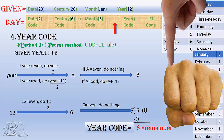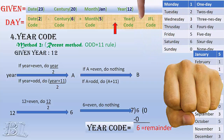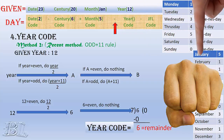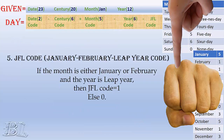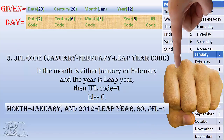Since we need to subtract the year code, we move 6 steps to the left as shown: 1, 2, 3, 4, 5, and 6. Now, to find the JFL code: the given month is January and the year 2012 is a leap year, hence the JFL code equals 1. Since the JFL code is to be subtracted, we move one step to the left as shown.